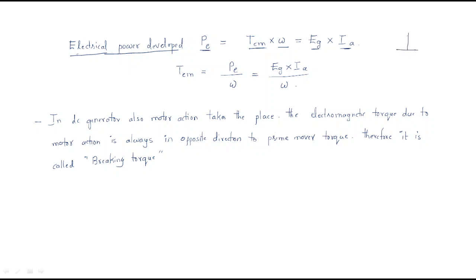Why generated EMF? Because it is a generator — in the armature it generates E_G and then generates current I_A. From this we can write the electromagnetic torque equals P_E divided by speed, which equals E_G times I_A divided by speed. So the electromagnetic torque equals generated EMF E_G times armature current divided by speed. This is a very important equation — the relation between electromagnetic torque and the generated EMF.